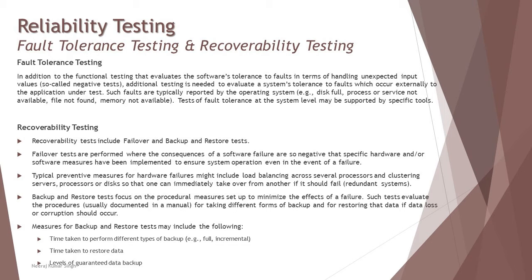The next part is fault tolerance testing. It evaluates the software's tolerance to faults in terms of handling unexpected inputs — what if a user tries to put something not recommended by the product? How far can it recommend the correct input in return, or try to round off something? For example, if you put a value like 250.03, it automatically accepts 250. These kinds of default tolerance behaviors make the product more reliable, automatically evaluating the value that should be accepted to minimize user effort.